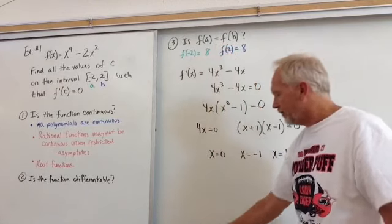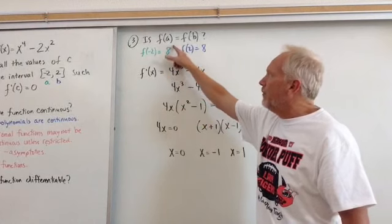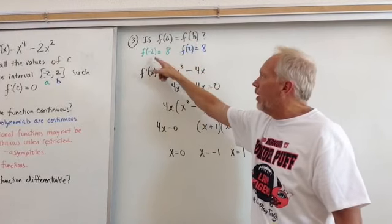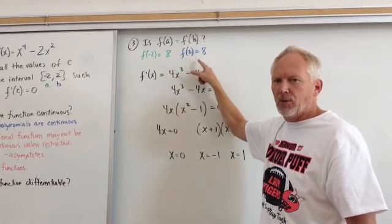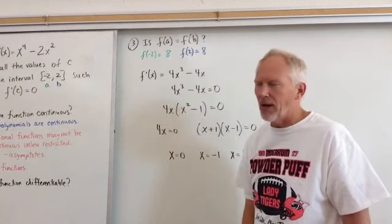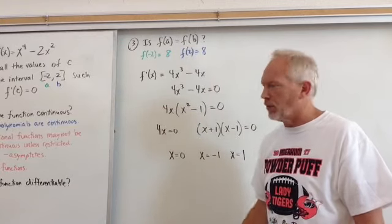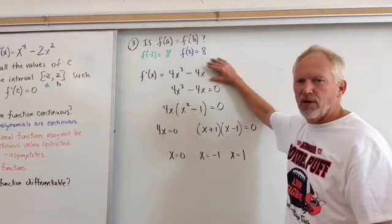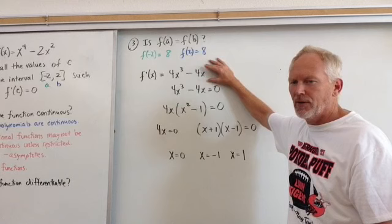So here's what we do next. We double check and make sure, is f of a equal to f of b? Well, f of negative 2 is equal to 8 and f of 2 is equal to 8 for our function. So yes, that checks. So the three things that were in the theorem, if they work out, so yes, we're good. So then we go ahead and solve for where the first derivative is zero.